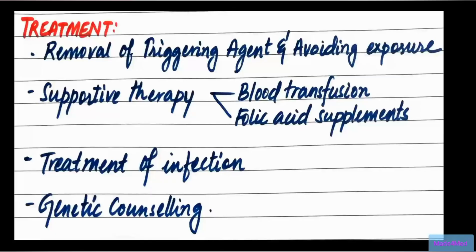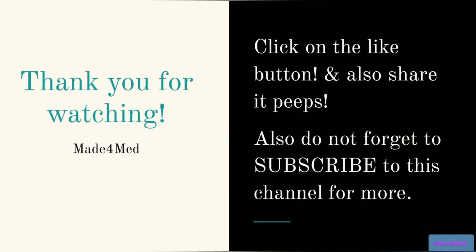For treatment, the main step is removal of the triggering oxidizing agent and avoiding further exposure. Then comes supportive therapy with blood transfusion and folic acid supplements, followed by treatment of the triggering infection. Finally, genetic counseling is recommended.